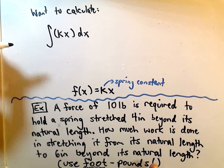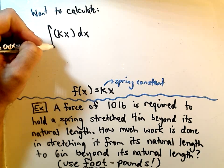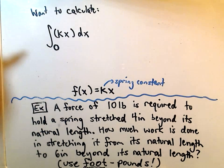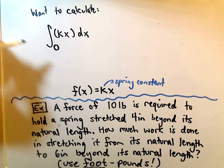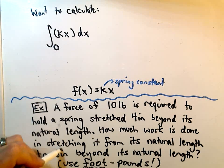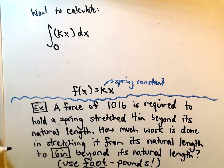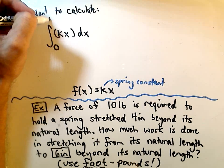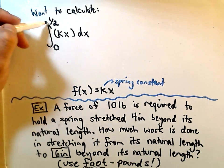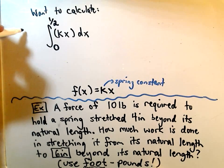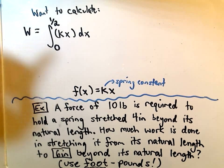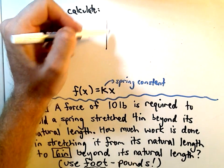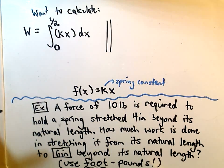And we're going to stretch it from its natural length, which you can think as being a distance of 0 feet beyond its natural length. And we want to stretch it 6 inches beyond its natural length. Well, there's 12 inches in a foot, so 6 out of 12, we're going to stretch it 1 half of a foot beyond its natural length. So, that's what we want to calculate, but in order to do this, we're going to have to know the value for k. But, obviously, we're given information to figure that out.